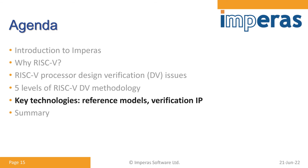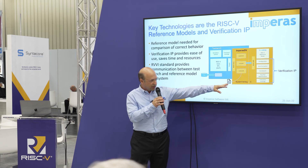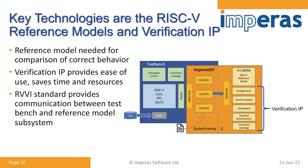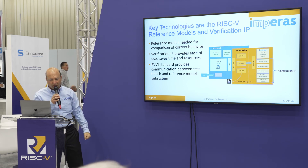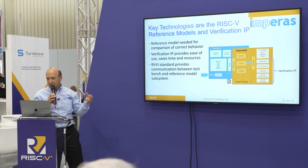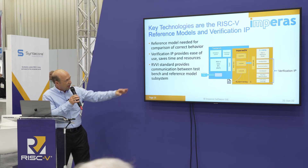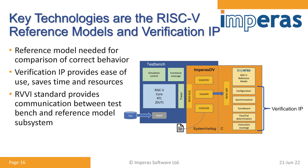What this has evolved to is something a bit simpler. Empirous introduced the Empirous DV product, which includes a reference model but also includes verification IP that helps with your DV process. The reference model is needed for comparison of correct behavior. The verification IP provides ease of use, saves time, and saves resources. Together with Open Hardware Group, we also developed the RVVI standard to provide easy communication between the device under test and the reference model.